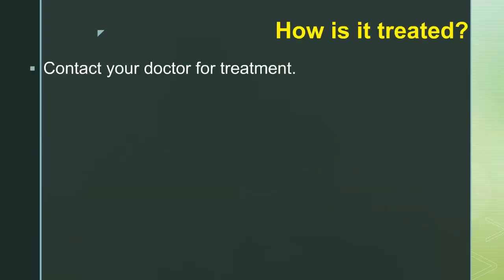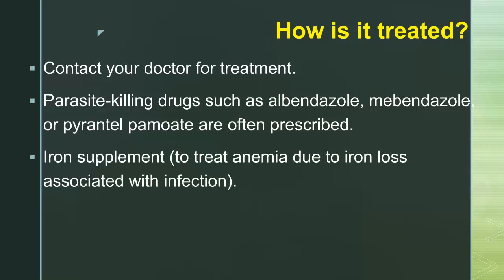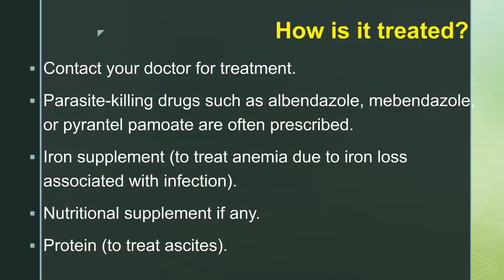How is it treated? Contact your doctor for treatment. Parasite-killing drugs such as albendazole, mebendazole, or pyrantel pamoate are often prescribed. Iron supplements to treat anemia due to iron loss associated with infection. Nutritional supplements if any. Protein to treat ascites.